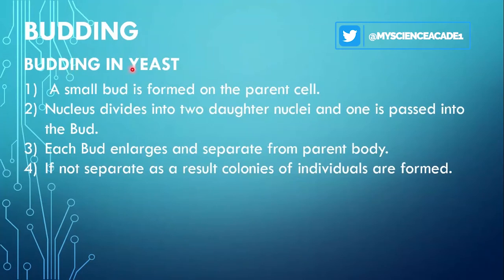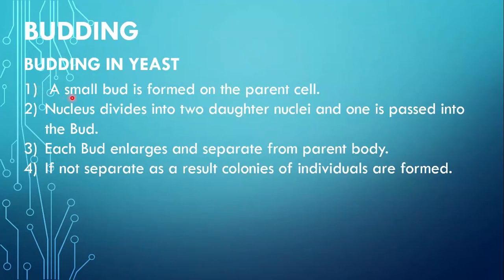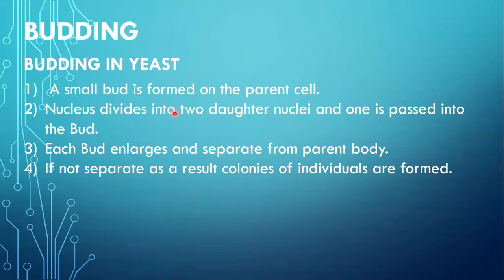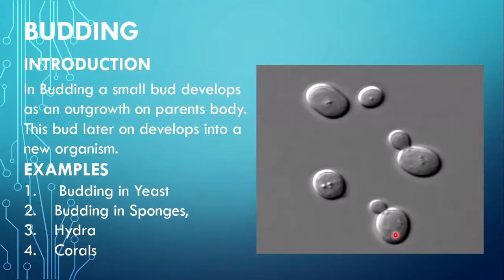First of all, let's look at budding in yeast. Budding in yeast takes place in 4 steps. In the first step, a small bud is formed on the parent cell. In the yeast parent cell, a small bud appears. Then the nucleus divides into two daughter nuclei and one is passed into the bud. After dividing, one daughter nucleus moves from the parent cell into the bud.